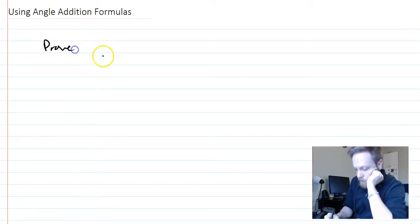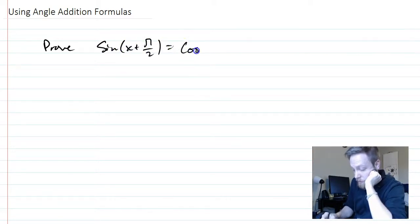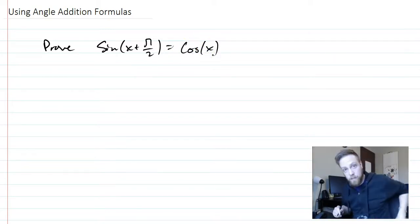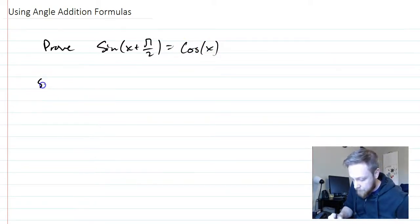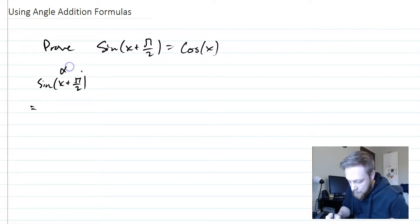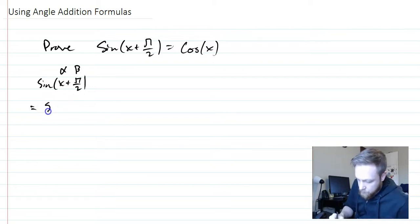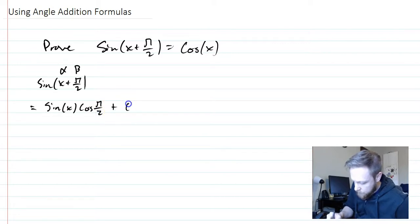So we want to prove that sine of x plus pi over 2 is actually the cosine of x function. All right. So I'm going to start with the left side, and I'm going to rewrite it. Now, that is the angle addition where alpha is x and beta is pi over 2. And remember, sine is the sine cosine, cosine sine version. So we're going to do sine of x cosine of pi over 2 plus cosine of x sine of pi over 2.